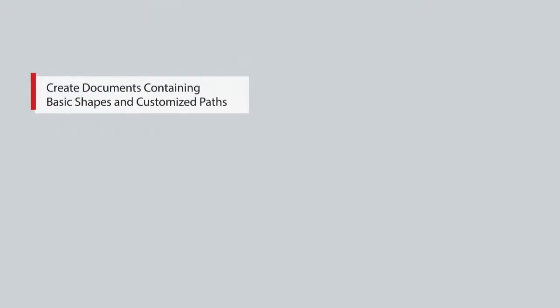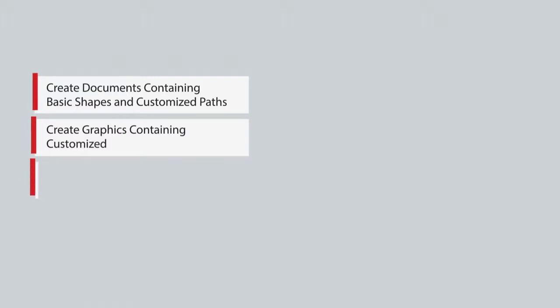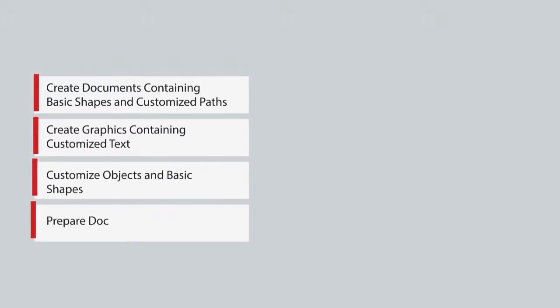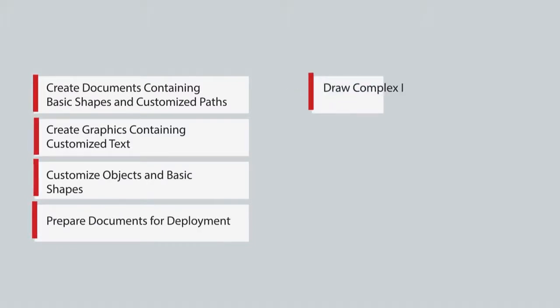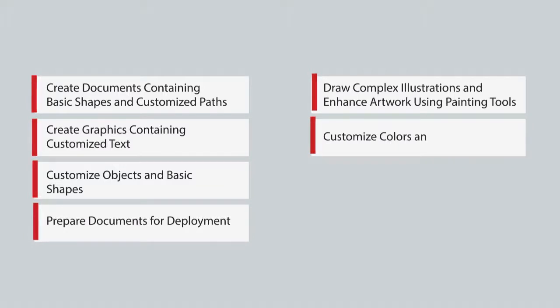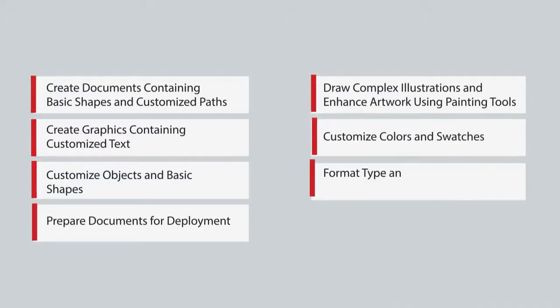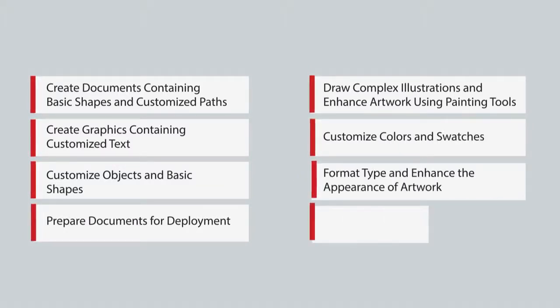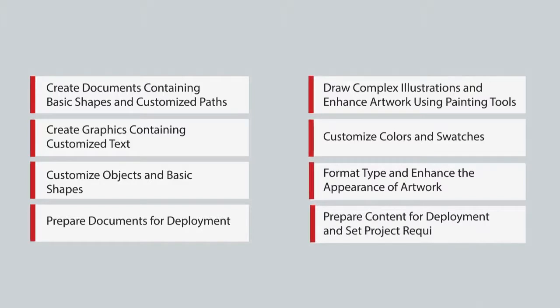Upon course completion, you will be able to create documents containing basic shapes and customized paths, create graphics containing customized text, customize objects and basic shapes, prepare documents for deployment, draw complex illustrations and enhance artwork using painting tools, customize colors and swatches, format type and enhance the appearance of artwork, and prepare content for deployment and set project requirements.